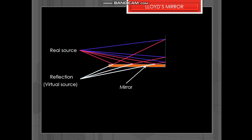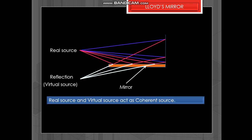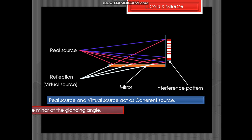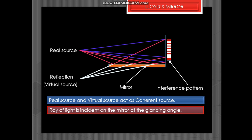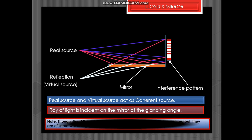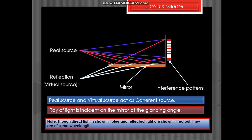Now as a result we get a virtual image here due to the reflection. So the virtual source and the real source give out waves and form the interference pattern because these two act as a coherent source.